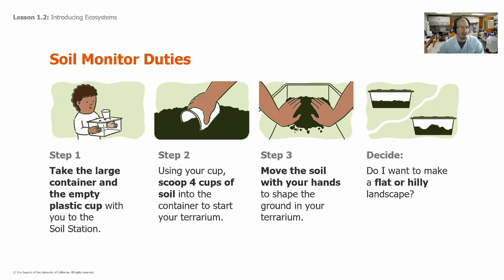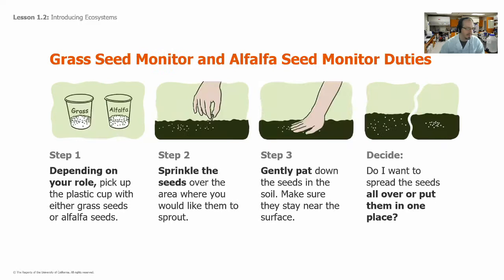If we were doing this in class, each group would have its own terrarium to set up. Since I only have room in my apartment for three, we'll have a little less variety than we'd have in class. These are the basic variables we're going to be changing. Each group's soil monitor would scoop four cups of soil into the container, move the soil with their hands, and decide whether to make it a flat terrarium or a hilly landscape.